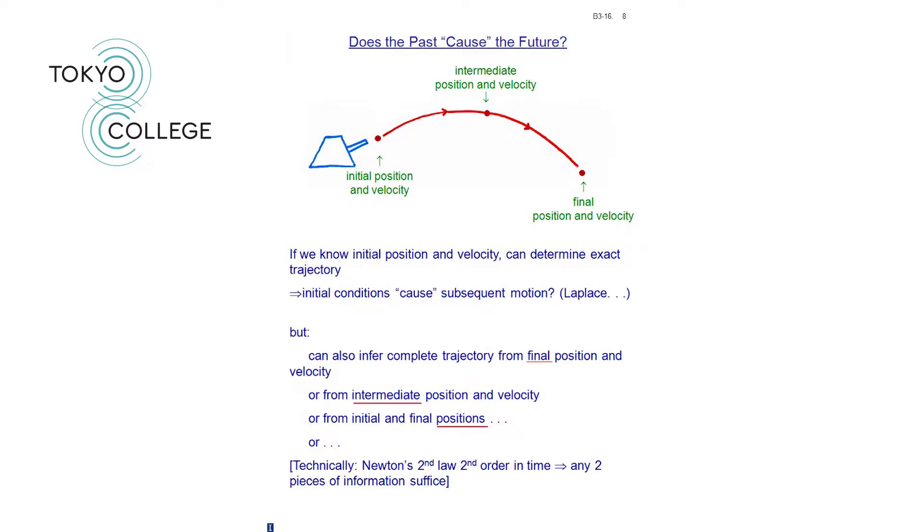But there's a snag in this argument. As we saw, Newton's laws are time symmetric. So you can also infer the complete trajectory from the final position and velocity, or from some intermediate position and velocity, or even from initial and final positions. For those of you who are physicists, technically the argument is that Newton's second law is second order in time, so any two pieces of information are sufficient to determine the whole trajectory. So that says, we might just as well say, that it is the final position and velocity which caused the initial one, not vice versa.